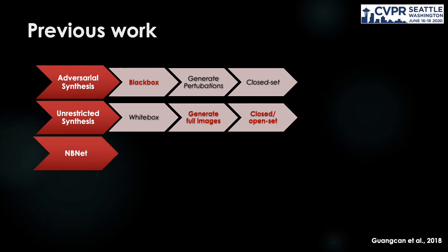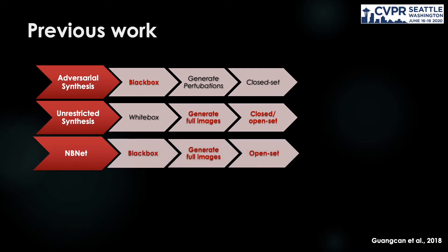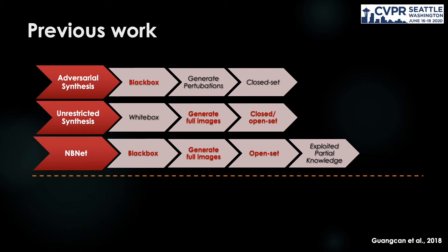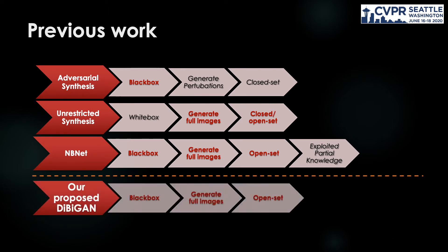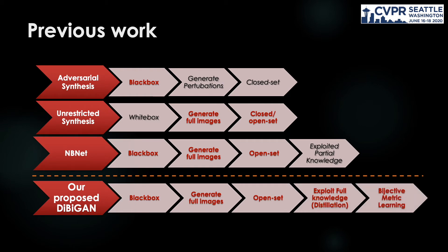Recently, NBNET was introduced and supports synthesis from a black-box classifier. However, with only pixel and perceptual losses, there are limitations of ID preservation when synthesizing different features of the same subject. We further address these issues with bijective metric learning and distillation knowledge for the reconstruction task.